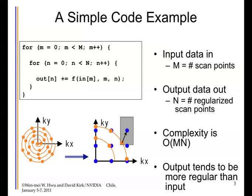The input data is the scan points, called M — that's the outer loop. The output data N is the regularized scan points in the inner loop, and the algorithm complexity is N times M. The output tends to be more regular than input — here you regularize your spiral scan data into regularly spaced output points. Most applications have a cutoff property: each input point only affects a range of output points. We'll first do a simple form where every input affects every output, then cover the cutoff case requiring binning techniques in a later lecture.